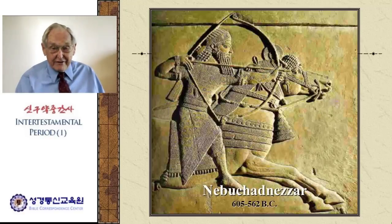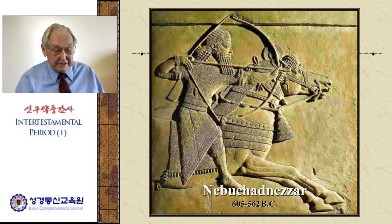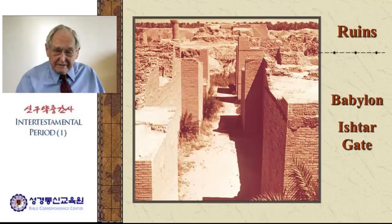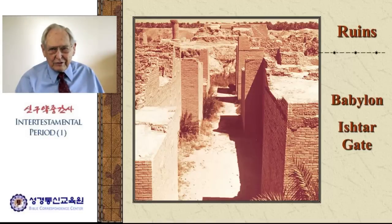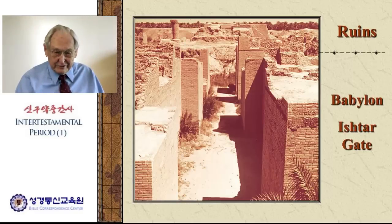Nebuchadnezzar was a very ambitious man and a great warrior in his time. He led many campaigns in which he destroyed or captured many of the people who were around him. Here we have the ruins of the old Ishtar Gate in Babylon. Babylon enjoyed being one of the grandest cities in the entire world — maybe the grandest at that time. And Nebuchadnezzar had his mind set on making it an example to the whole world of how powerful and wealthy he was.